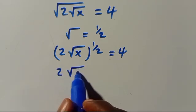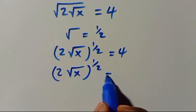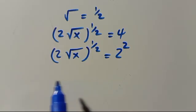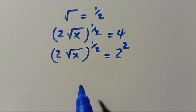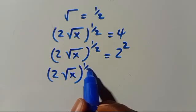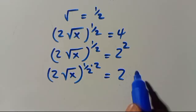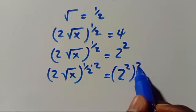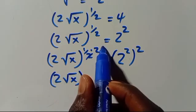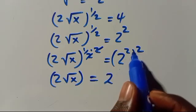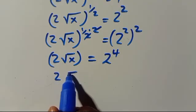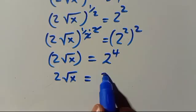We rewrite 4 as 2², so: 2 · x^(1/2) = 2². Then we raise both sides to the power of 2: 2 · x^(1/2 · 2) = 2^(2·2). The exponent on x simplifies to 1, giving 2 · x^1 = 2^4.